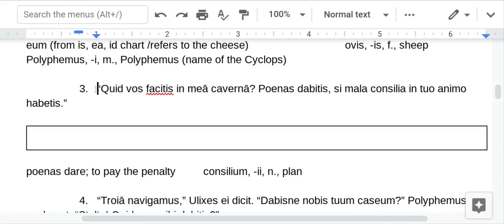What are you doing? Some of you translate as make. Faccio can be make or do. So, do here makes a little bit more sense. What are you doing in my cave? And the T-I-S is you plural. And the woes is the you plural pronoun. So, it all matches up. What are you doing in my cave? You will pay the penalty. Here, the verb is in the future. And it's that you plural. You will pay the penalty if you have bad plans or evil plans in your mind.